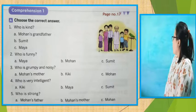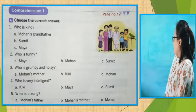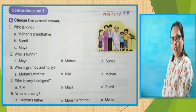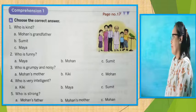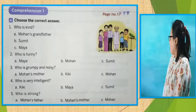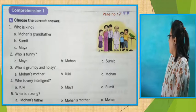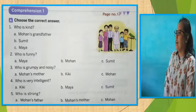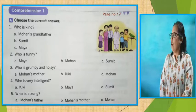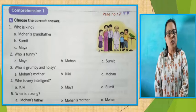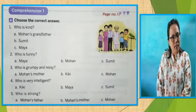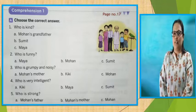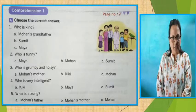Who is funny? Yes children, who is funny? Let's see the options. Number A, Maya. Number B, Mohan. Number C, Sumit. Now tell me — options are also given. Who is funny? Think children. Yes — Sumit. Sumit is funny.